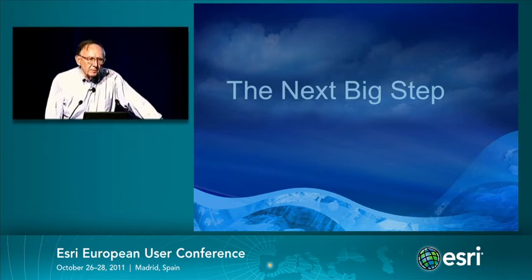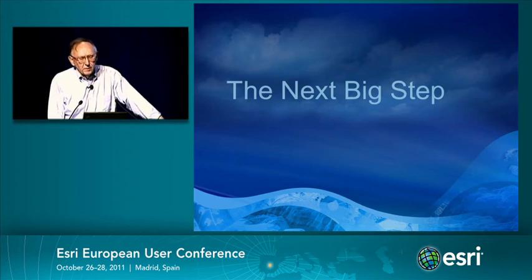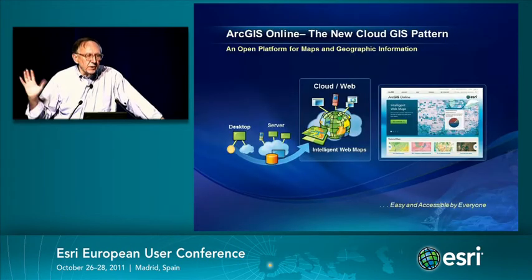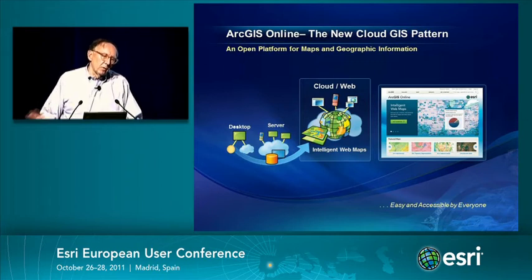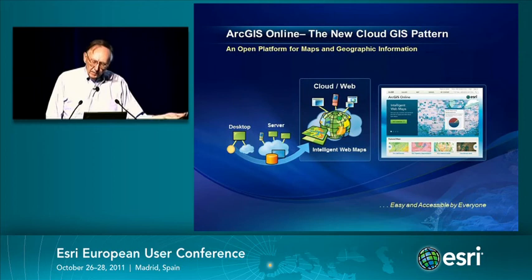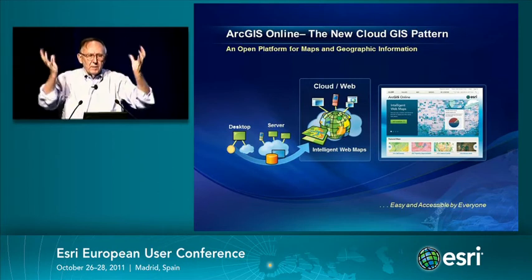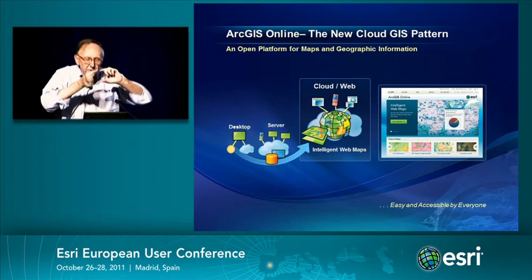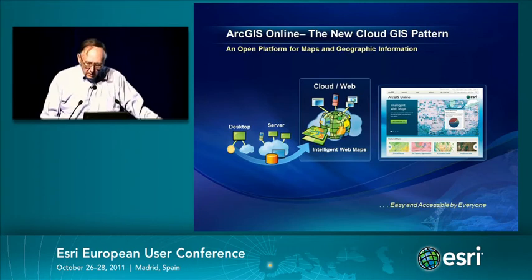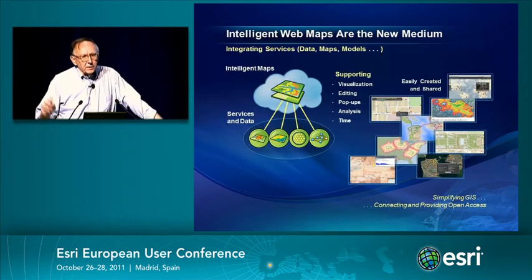The next big step is pretty dramatic, going on in parallel with the ArcGIS 10.1 environment. The next big step is really ArcGIS Online — a new cloud pattern where ArcGIS is in the cloud. Not simply a copy of server in the cloud, but a total system: an open platform for sending data to and managing data in a totally cloud environment, accessible by thick clients and thin clients. This is the cloud model Carlos talked about — a cloud that covers the entire world, mixed with geographic information.